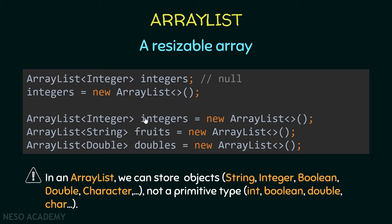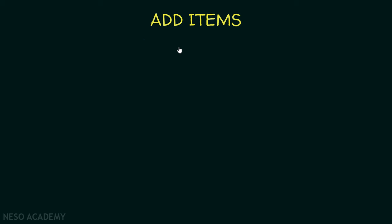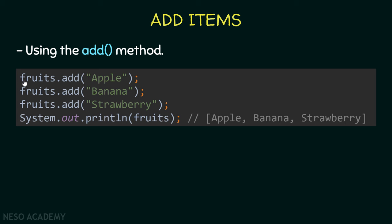After we create the ArrayList called 'integers' with type Integer, we can still store integer values in it normally — for example, storing the number five works fine. What's important is that when we specify the type we use a wrapper class. Now, when we create an ArrayList object it has methods; one of them is the add() method, which we use to add elements.